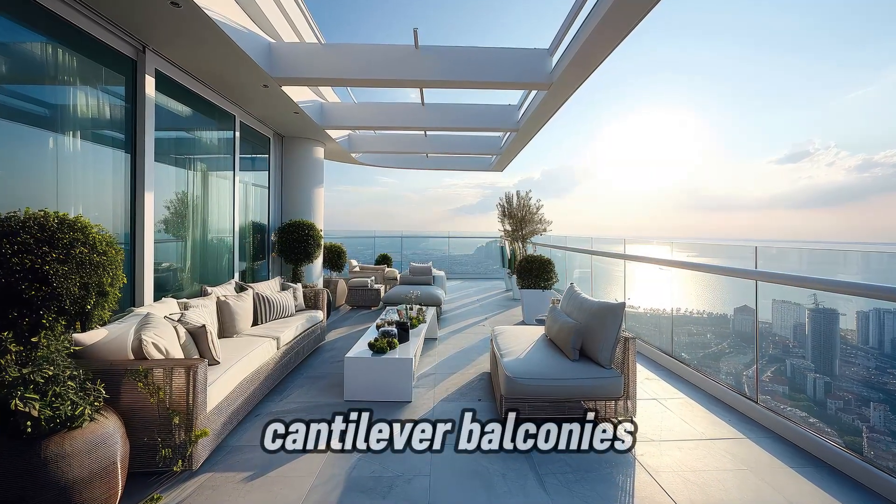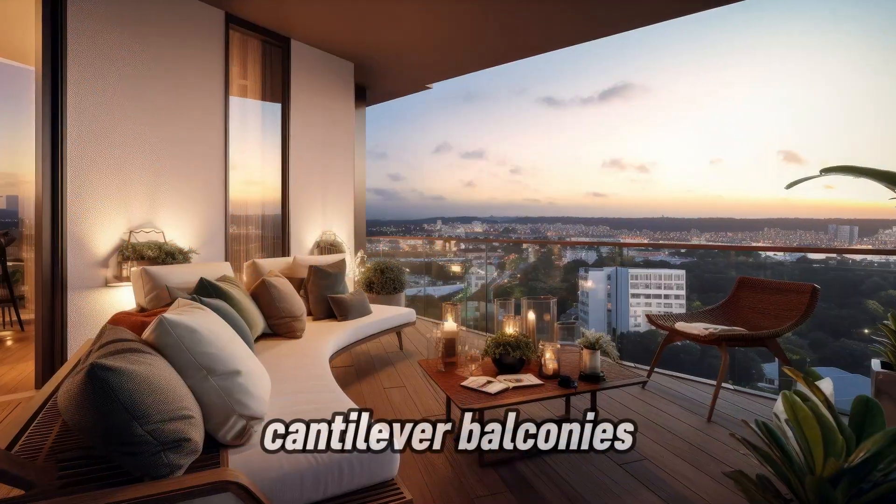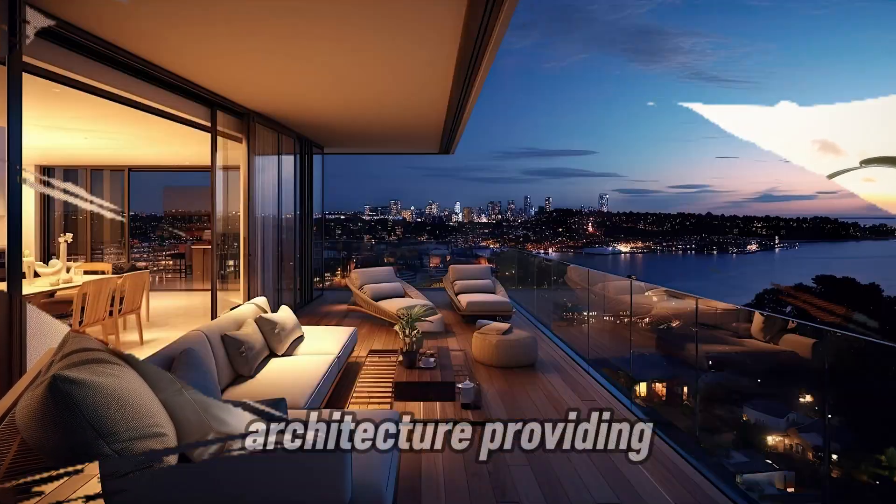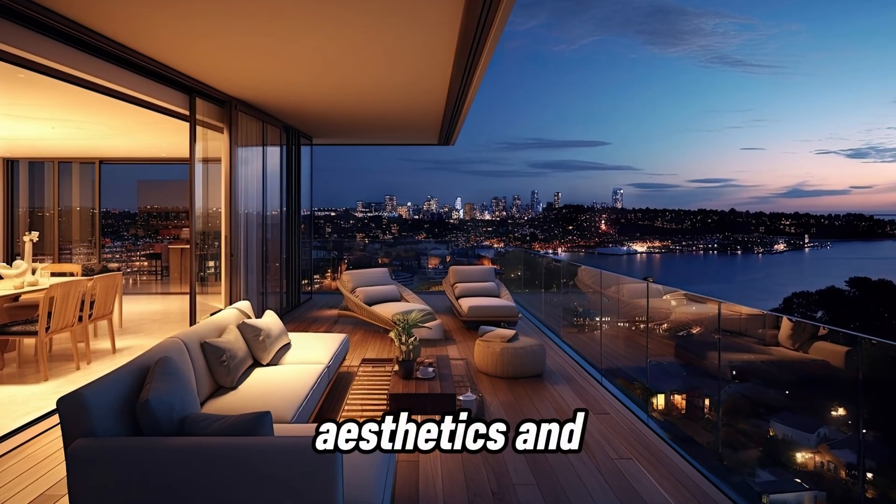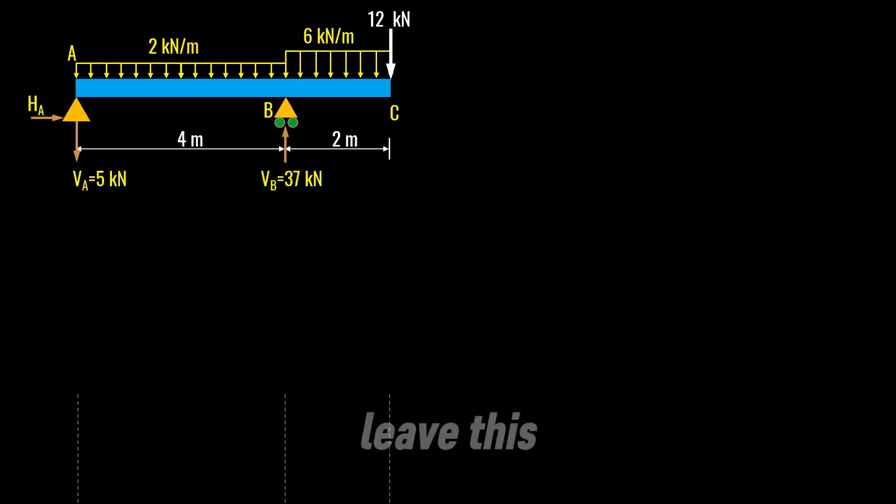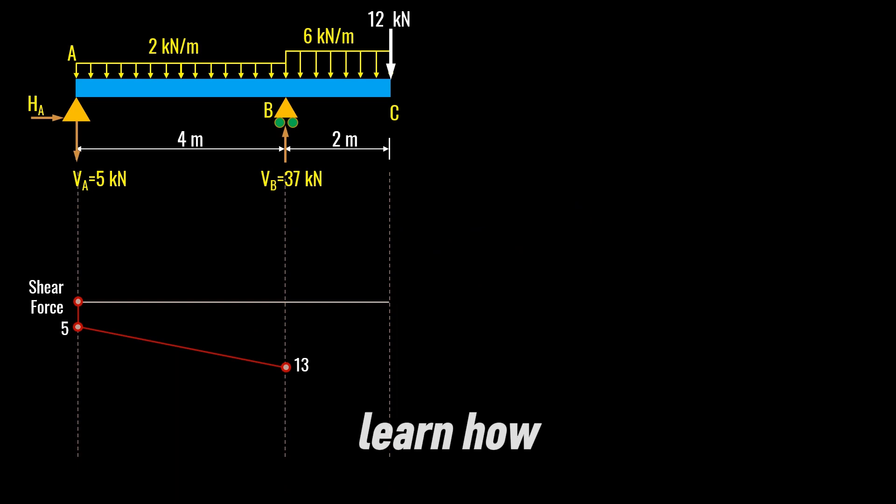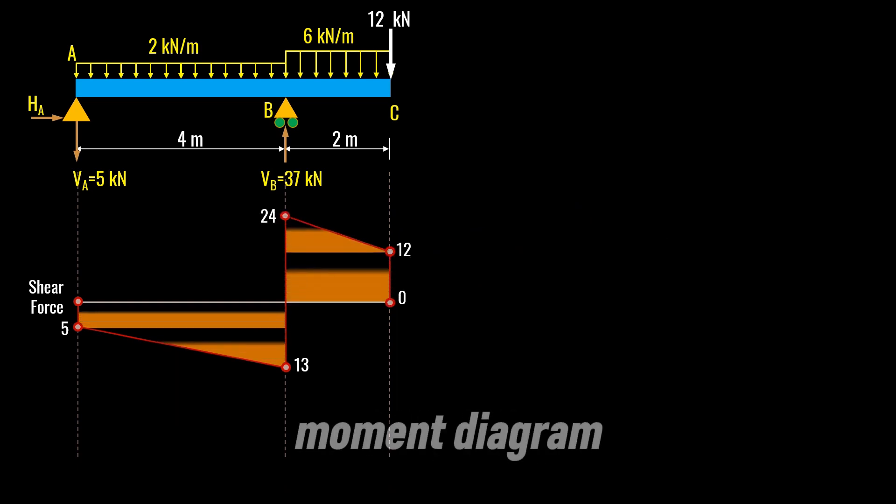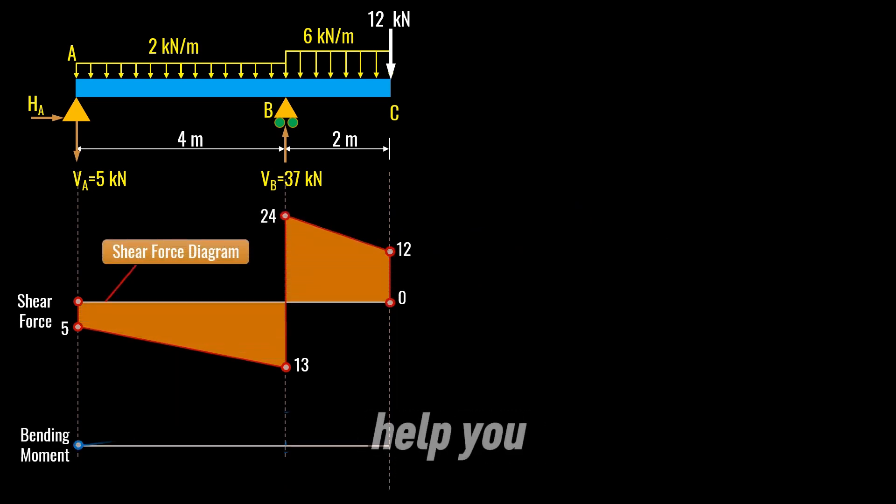Third is cantilever balconies. Cantilever balconies are a common feature in modern architecture providing stunning aesthetics and functional outdoor spaces. When you leave this lecture, you will learn how to plot shear force and bending moment diagrams for an overhanging beam and that will really help you understand structural analysis of such beams.